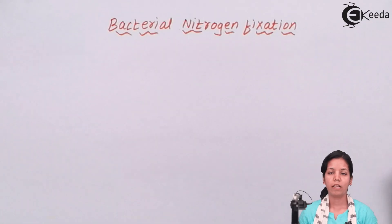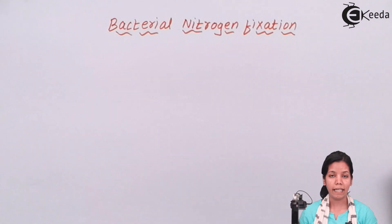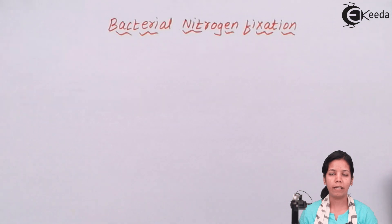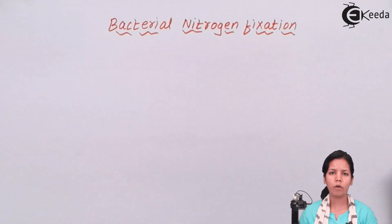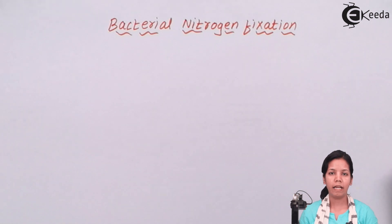Bacterial nitrogen fixation. Leguminous plants require nitrogen for their growth and development. Nitrogen is required for their DNA formation or nucleic acid formation. Even their hormones, growth and development are dependent on nitrogen. Whenever a leguminous plant is growing in soil, it requires nitrogen — approximately 80%. The roots of the plants are unable to absorb nitrogen, whether it is atmospheric or soil nitrogen, alone by itself.